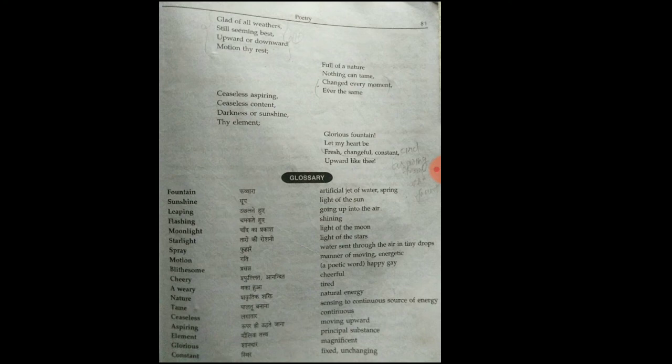This was the remaining explanation of the fountain chapter which we have told you. From this you can do the comprehension of these three stanzas - glorious always, glorious fountain, and full of nature. If you have any difficulty, please message me, you will be informed about any problem. Today with this, thank you.